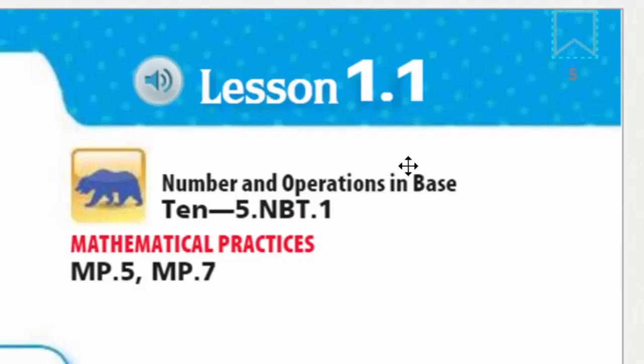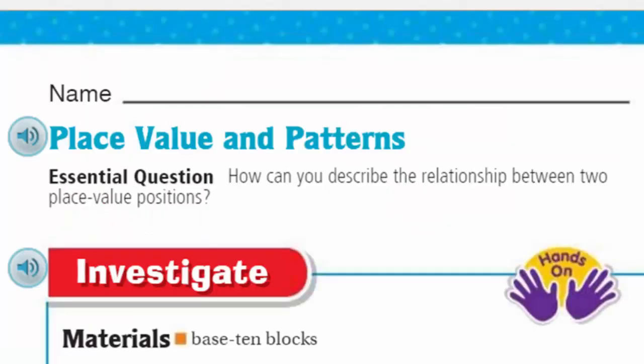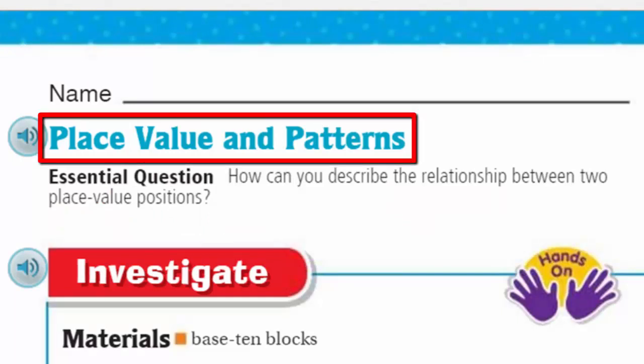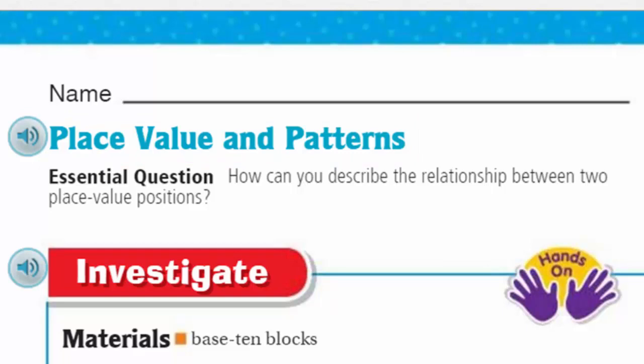Come and take a look at our lesson 1.1. You can see our topic is all about place value and patterns. That's a lot about what math is - a lot about place value and patterns. Good thing they're starting off there. We have an essential question: how can you describe the relationship between two place value positions? And that essential question is our learning target. This is our objective, what we are hoping that you guys learn as a student outcome.